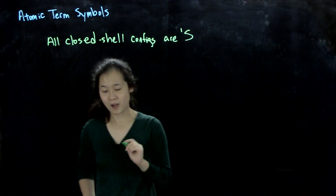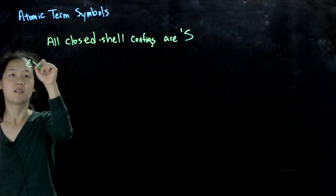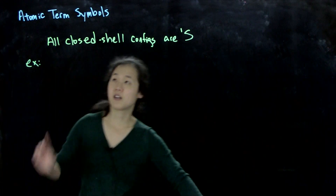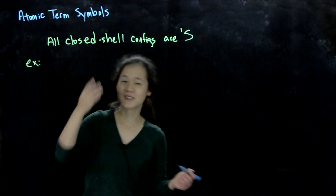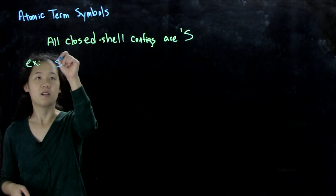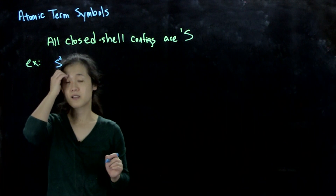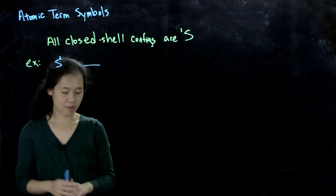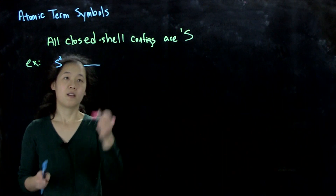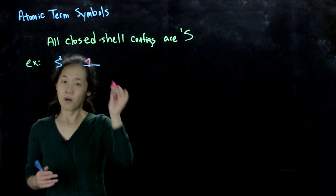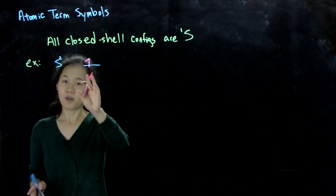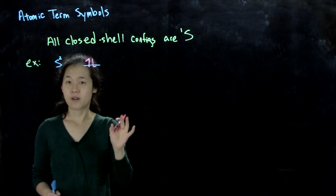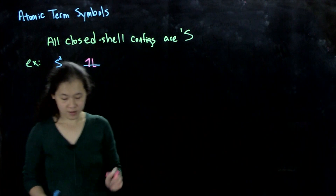Let's do an example for why. Example one: one possible closed-shell configuration, again all orbitals are filled, is s². So this is lowercase s, meaning some S orbital is completely filled. We have one electron here and one electron here, and by the Pauli exclusion principle, if one's going up, the second one in the same orbital has to be pointing down because no two electrons can share the same set of quantum numbers.